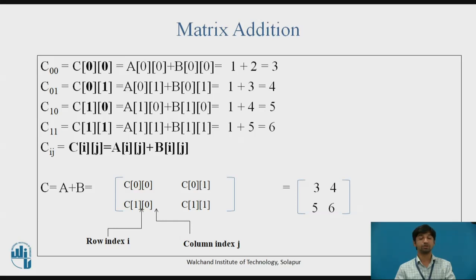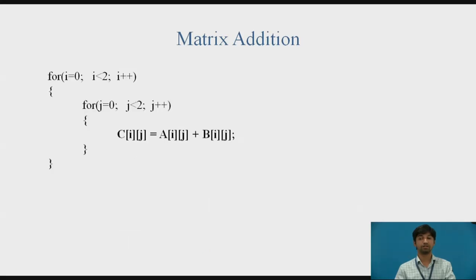The second row, second column element of A — that is A[1][1] — is added with the second row, second column element of B — that is B[1][1] — and stored in the second row, second column element of C[1][1]. The for loop handles the process of adding two matrices having similar row and column indices. The row index is denoted by i (0, 1) and column index by j (0, 1).